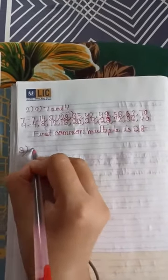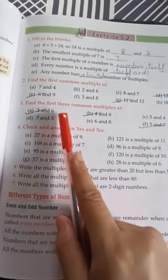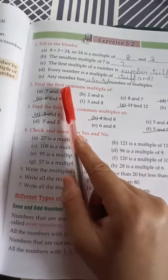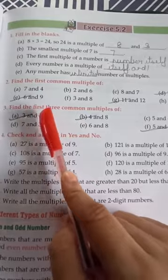Now come to question number 3. I will solve question number 3C: 5 and 4. Here the question is find the first 3 common multiples of these numbers. In second question you have to write the first common multiple, and here you have to write the first 3 common multiples. So it is also very easy.